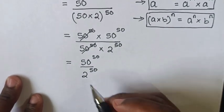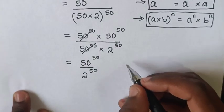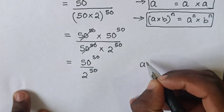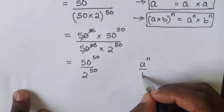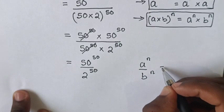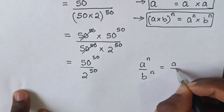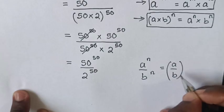Then, in this division of exponents, we apply the exponential rule that A^N over B^N equals (A over B)^N.